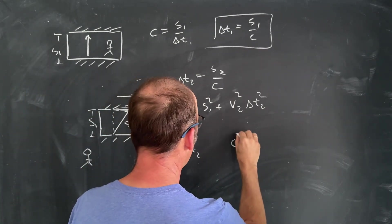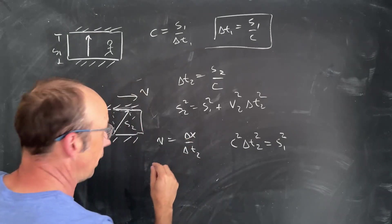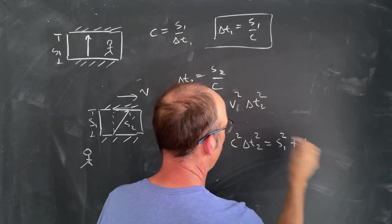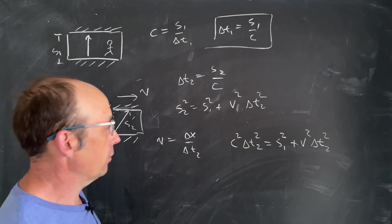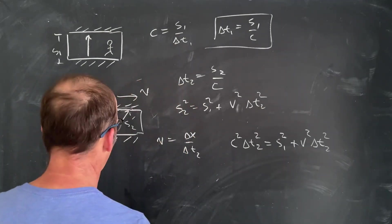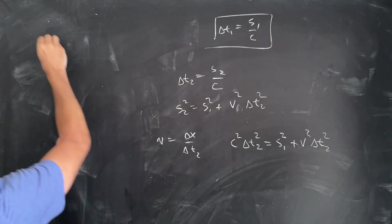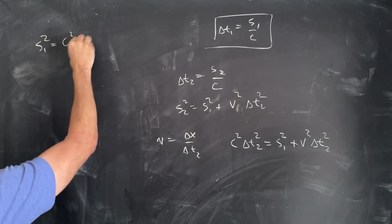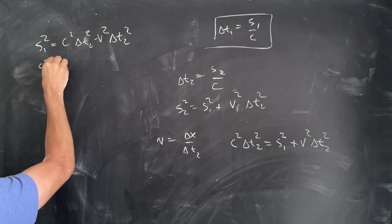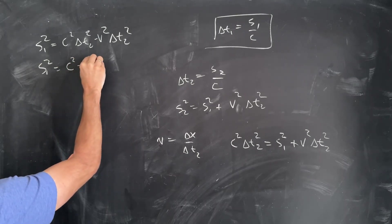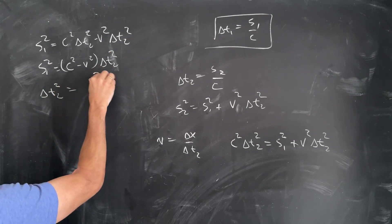So I have C squared delta T2 squared equals S1 squared, which is the length of that. We'll just leave it like that for now. Plus V squared delta T2 squared. Now I want to solve that for delta T. I'm going to subtract this from both sides. I get S1 squared is going to be C squared delta T2 squared minus V squared delta T2 squared. Now I can factor out the delta T. I get S1 squared is going to be C squared minus V squared times delta T2 squared. So delta T2 squared is going to be S1 squared over C squared minus V squared.